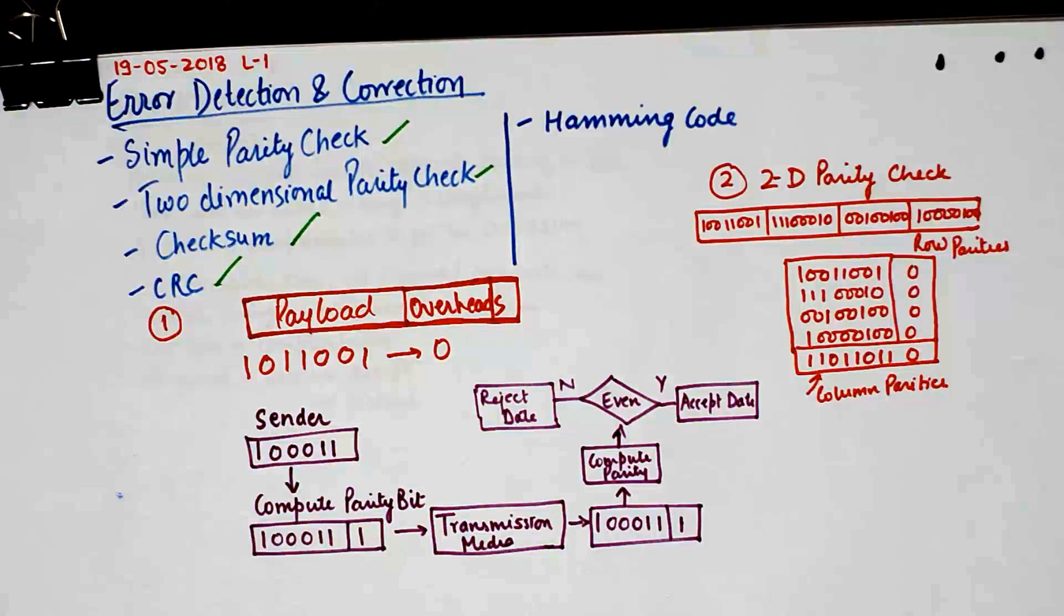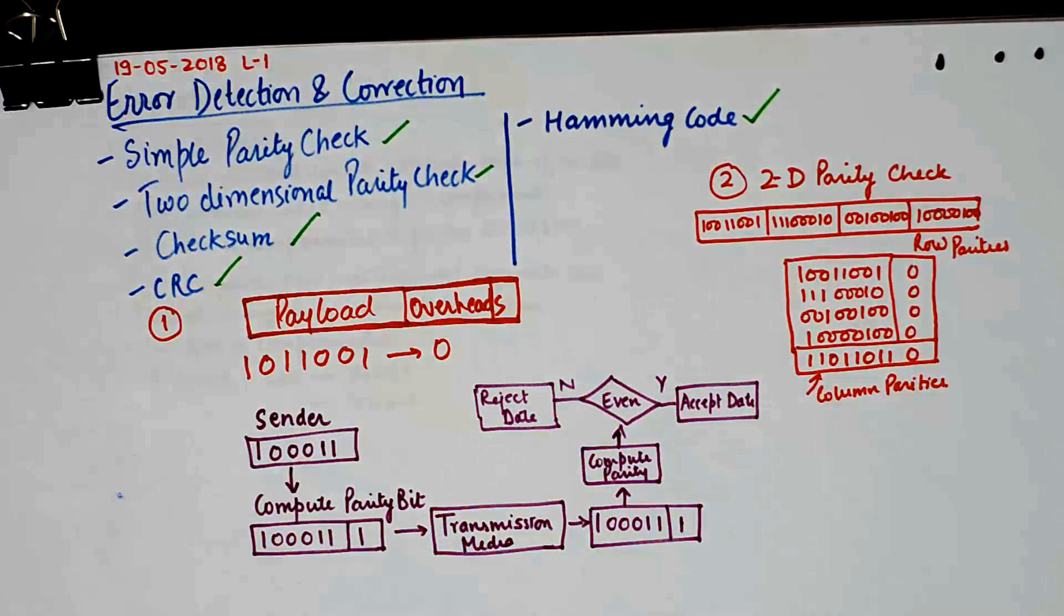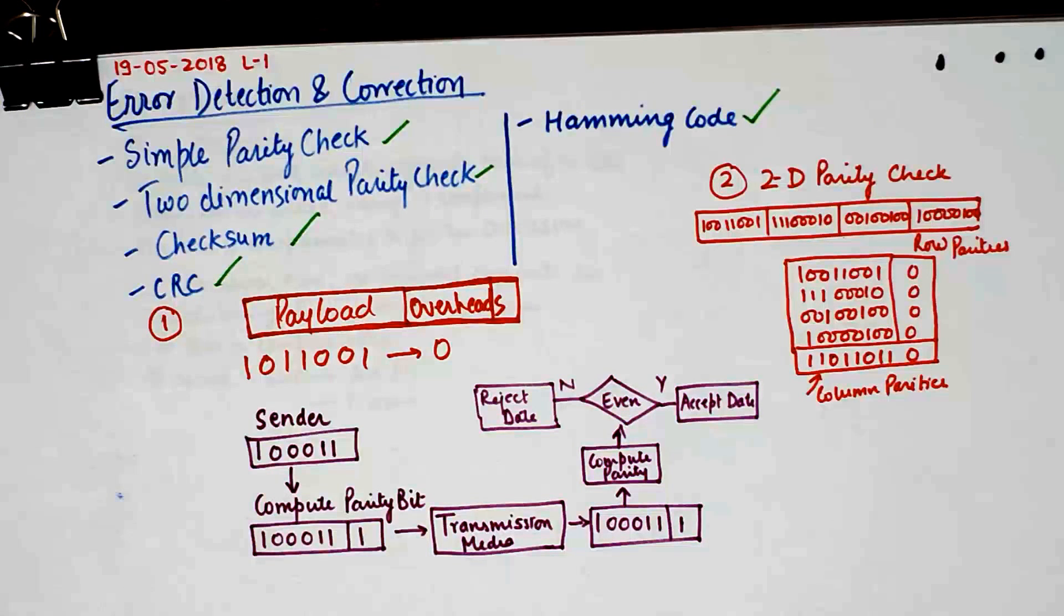These techniques all follow a unique algorithm and they detect the error at the receiver using that algorithm. Furthermore, we have a technique known as hamming code which not only detects but also corrects the error at the receiver. Now discussion of all these error detection and correction techniques is what the objective of this tutorial series is. So it will be a long tutorial series so I'll divide it into three parts.